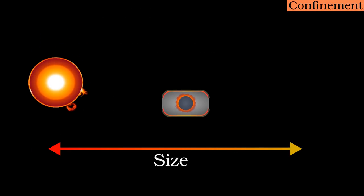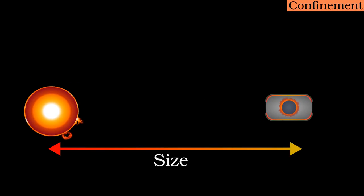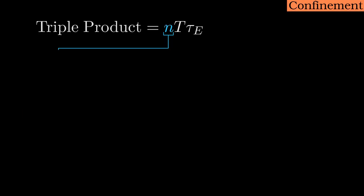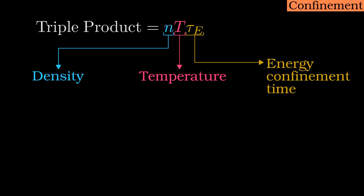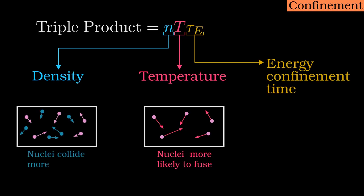Even though fusion reactions happen in a variety of plasmas with sizes from the microscopic to the astronomical, it is possible to make some generalizations. One metric which allows confinement performance to be compared is the triple product. The density multiplied by the temperature multiplied by the energy confinement time. Up to a point, increasing temperature increases the probability that collisions will lead to fusion. A higher density, defined as the number of particles in a given volume, increases the rate at which those collisions happen.